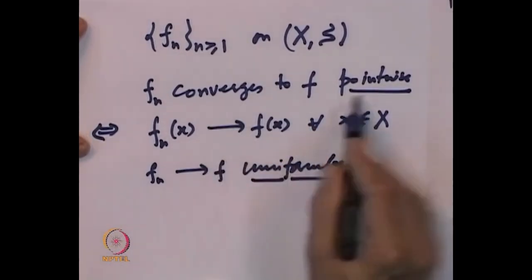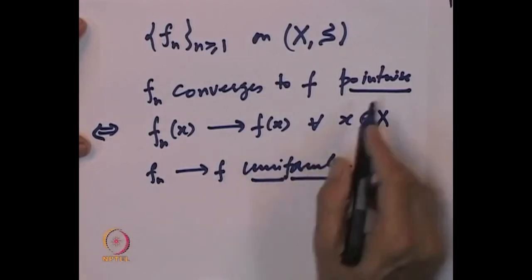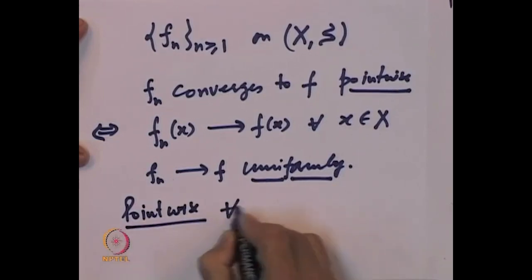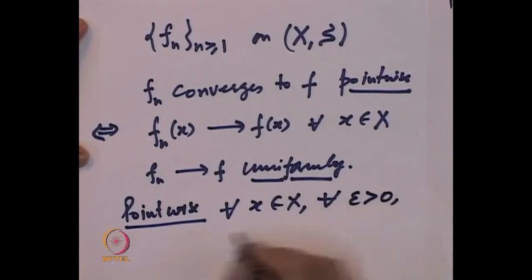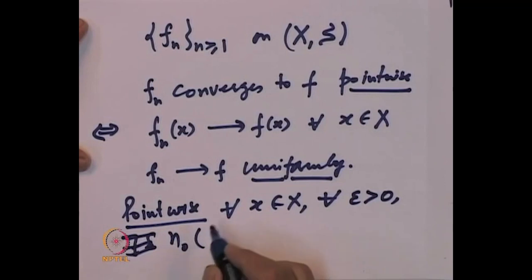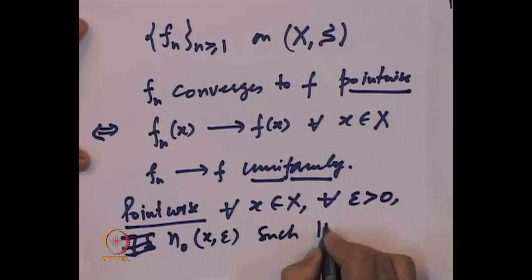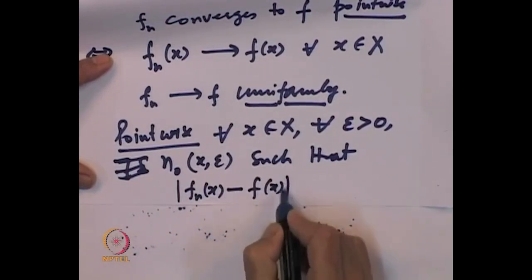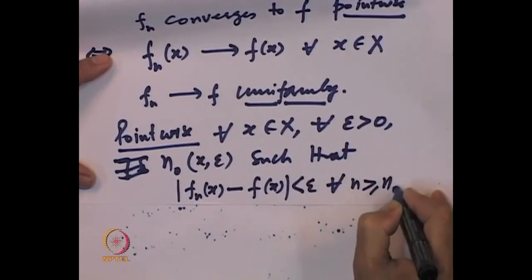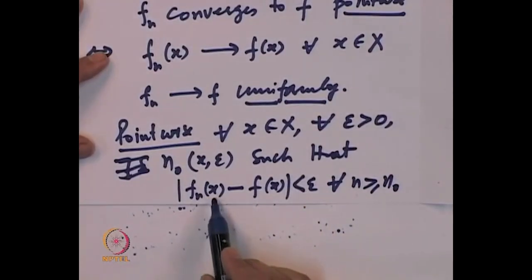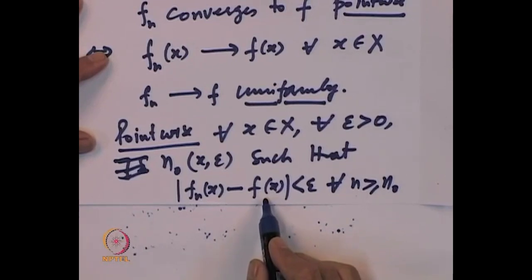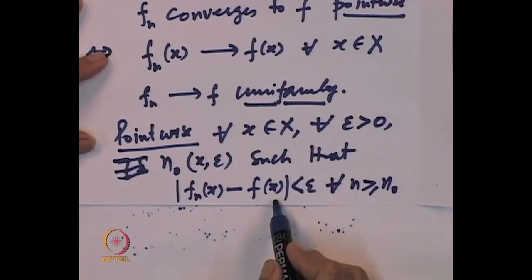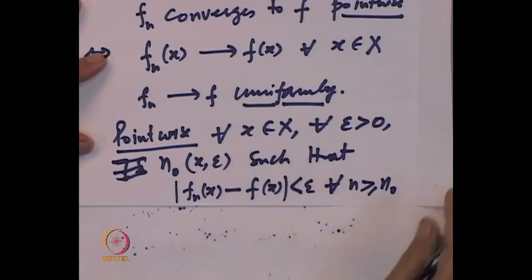What is the difference between pointwise convergence and uniform convergence? Let us write down in terms of epsilon-delta definitions. Pointwise means: for every epsilon greater than 0, there is an n_0 which depends upon the point x and epsilon, such that |F_n(x) − F(x)| < epsilon for every n greater than n_0. That essentially means that the numbers F_n(x) converge to F(x) as n goes to infinity. Given epsilon > 0, there is a stage after which F_n(x) is close to F(x); this stage may depend upon the point x and the number epsilon.